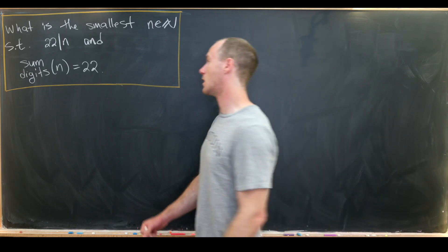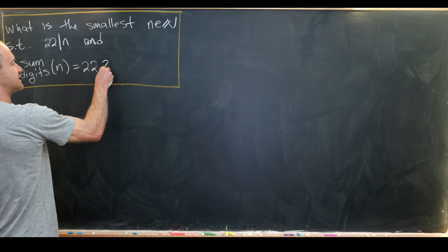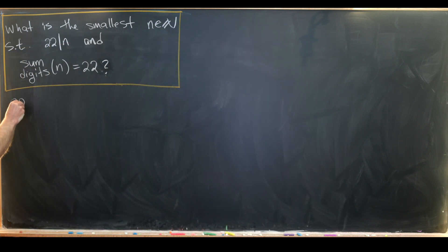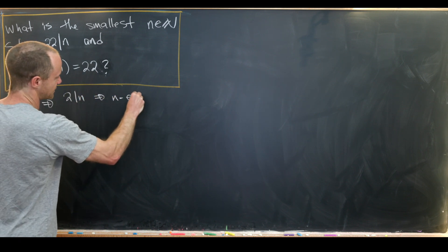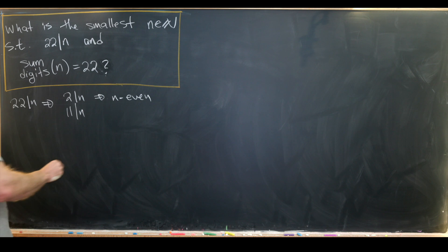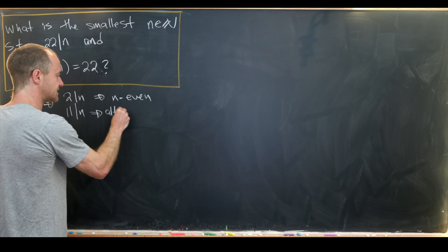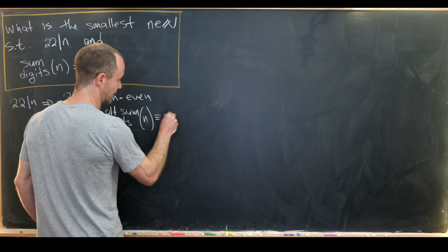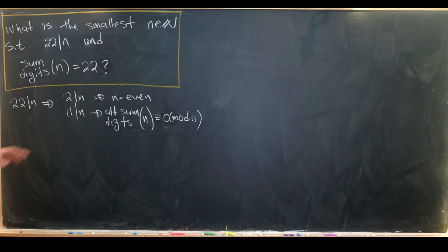Now we're going to decide what is the smallest natural number that's divisible by 22 and whose digit sum is equal to 22. If 22 divides n, that tells us that 2 divides n — in other words n is even — and also that 11 divides n. The divisibility by 11 is quite important because if 11 divides n, then the alternating sum of the digits of n is congruent to 0 mod 11.